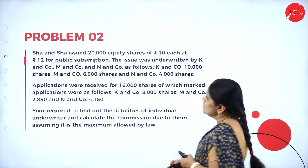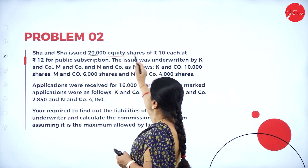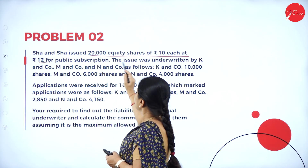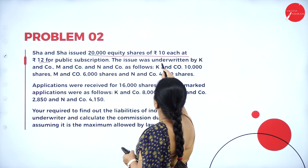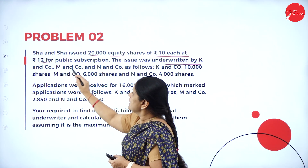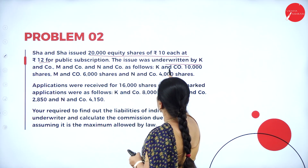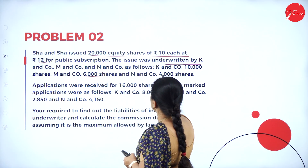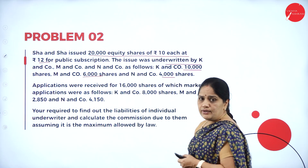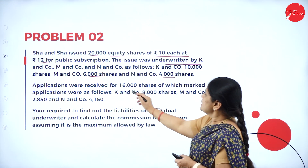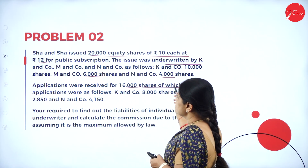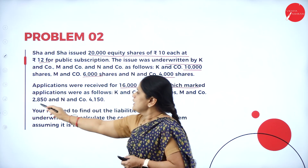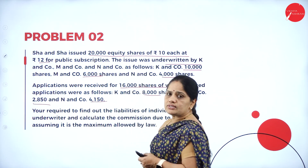In problem 2, Shah and Shah Limited issued 20,000 equity shares of rupees 10 each at rupees 12 for public subscription. The issue was underwritten by K and Company — 10,000 shares, M and Company — 6,000 shares, and N and Company — 4,000 shares. Applications were received for 16,000 shares, of which marked applications were 8,000, 2,850 and 4,150.